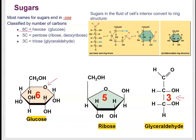It is important to be able to count carbon atoms in a sugar ring. Remember that every corner represents a carbon, except one corner is occupied by oxygen. Starting from oxygen and going clockwise in glucose: carbon 1, 2, 3, 4, 5, and carbon 6 hangs off the ring. This makes glucose a hexose. For ribose, the same approach gives carbons 1 through 4, with carbon 5 also hanging off — making it a pentose.